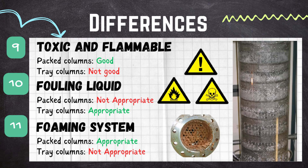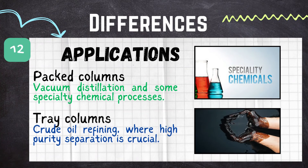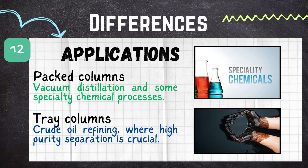In terms of applications, packed columns are often preferred where a large number of theoretical plates are not essential, such as in vacuum distillation and specialty chemical processes. Tray columns are commonly used in large-scale applications such as crude oil refineries, where high purity separation is crucial.